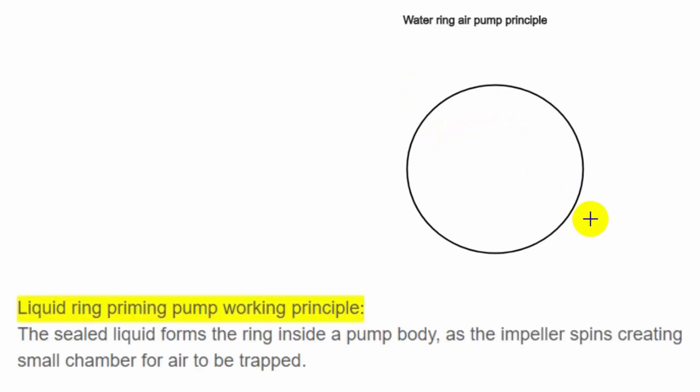Liquid ring priming pump working principle. The sealed liquid forms the ring inside a pump body, as the impeller spins creating small chambers for air to be trapped.